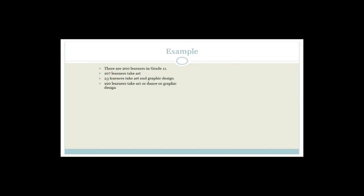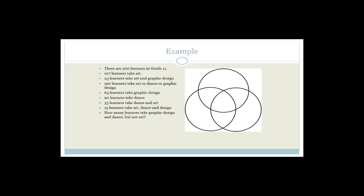There are 200 learners in grade 11. 107 of them learn art. 23 take art and graphic design. 190 take art, dance, or graphic design. 63 take graphic design. 90 take dance. 35 take dance and art. 15 take dance, art, and design. The question asks: how many learners take graphic design and dance but not art? We're going to call the top circle dance, the bottom circle art, and the third circle graphic design. We pop 15 right in the middle, since 15 learners take all three.